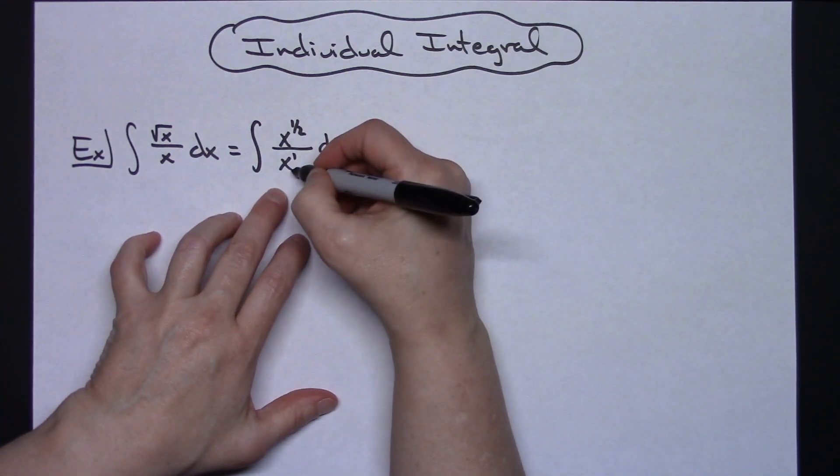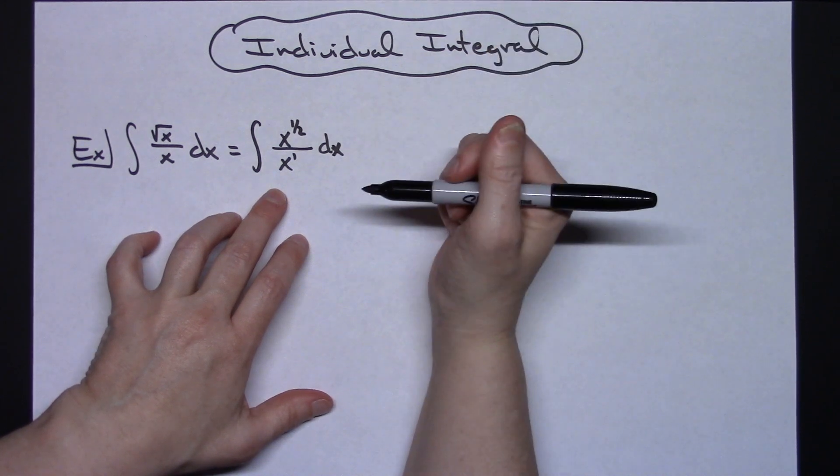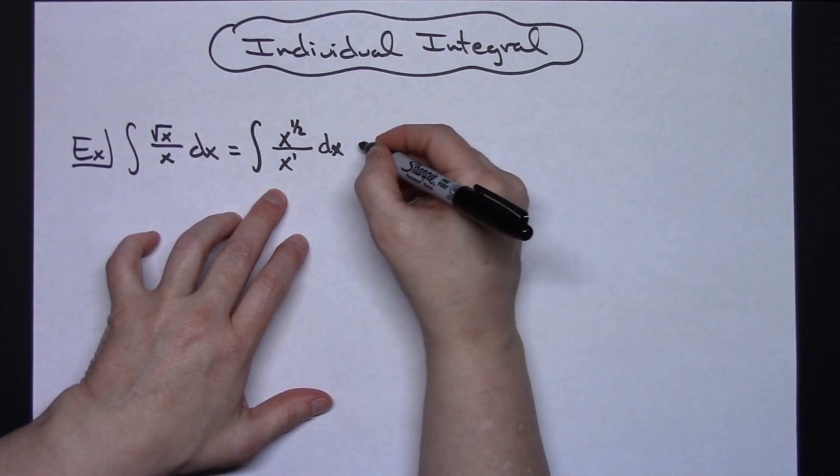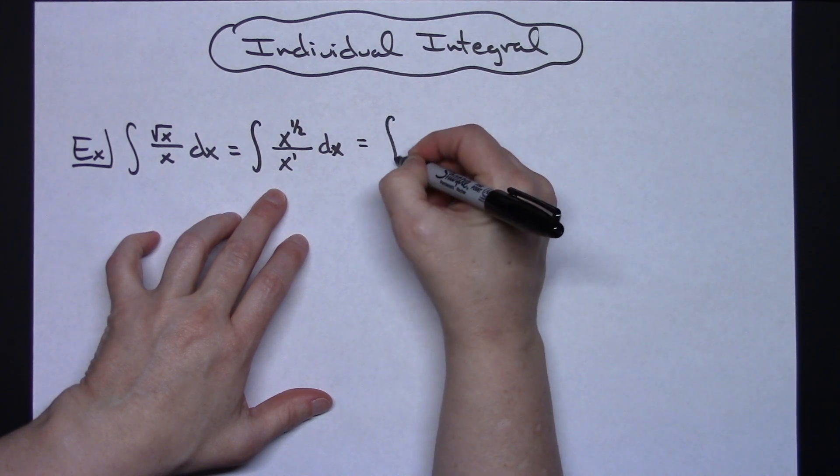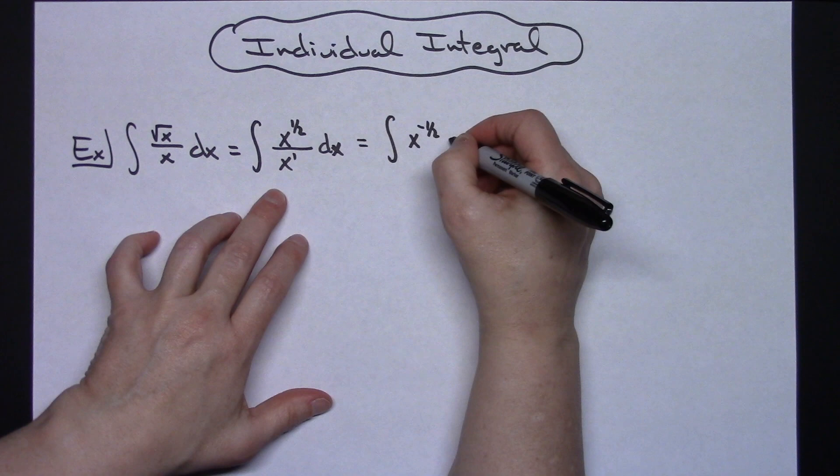And then looking at this, you've got a quotient there with like bases. So then you can just apply some laws of exponents right here to simplify this integral down to the integral of x to the negative 1/2 dx.